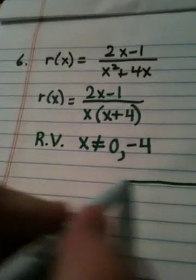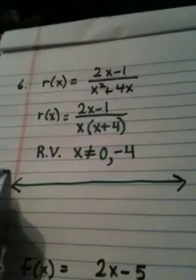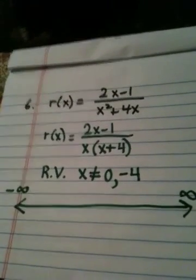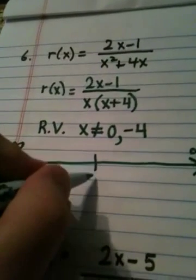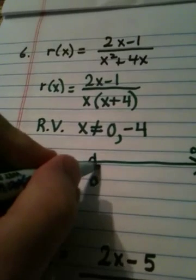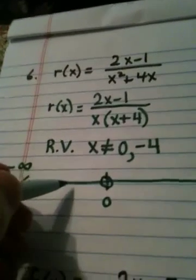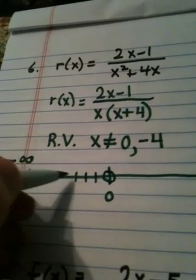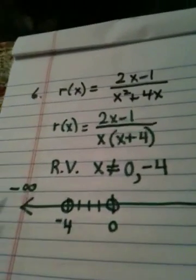Now, to find the domain, we draw our number line. Draw the number line, put negative infinity on this direction and put positive infinity above that arrow, and we throw out our two restricted values. So where we have a zero, we put an open circle, meaning it's not allowed in our domain, and then we go over here to negative 4, negative 1, negative 2, negative 3, negative 4, and we put an open circle there also.